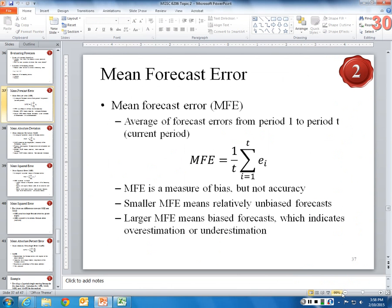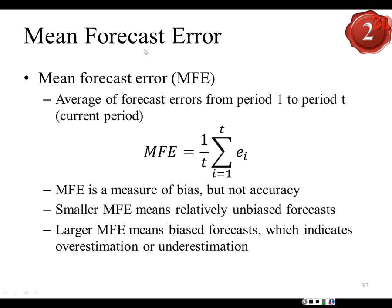So mean forecast error is the first measure of forecast quality — it's a measure of bias, not a measure of accuracy. You want this as close to zero as possible because when there's no bias, you have an equal amount of over-forecasting and under-forecasting, the positive and negative errors cancel out each other, and the average should be close to zero.